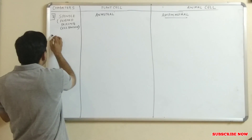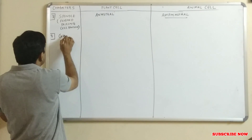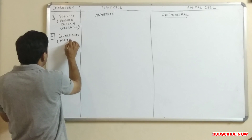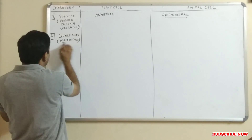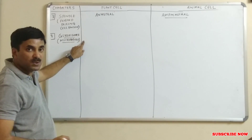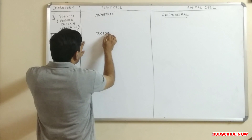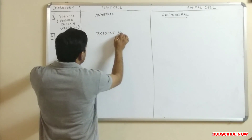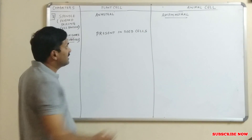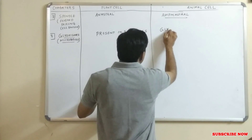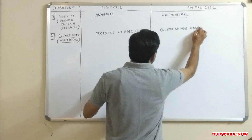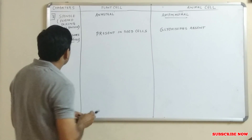The next point is glyoxysomes. Glyoxysomes are micro bodies found in the cell. In the plant cell, glyoxysomes are present in seed cells. While in the animal cell, glyoxysomes are absent — there are no glyoxysomes in animal cells.